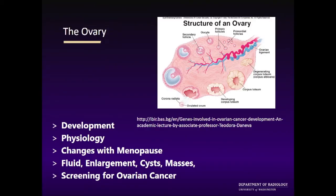What I'm going to do is we're going to talk about ovarian development. We're going to talk about the physiology of the ovary, both premenopausal and postmenopausal. We're going to talk about what happens during menopause that makes things change. And yes, we'll talk about some ultrasound stuff — fluid, ovarian enlargement, cysts, masses. I guess you can't really give a talk about ultrasound of the ovary without at least talking about this. But we're really going to look at the literature and some of the pitfalls and problems with doing this.